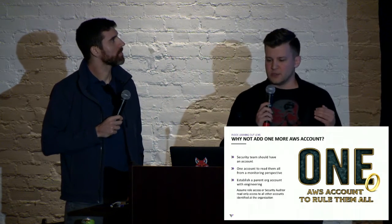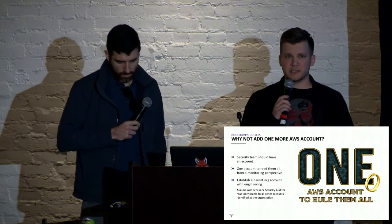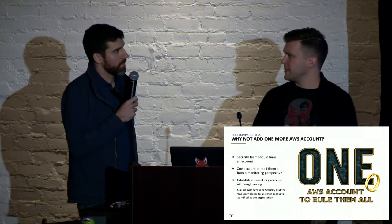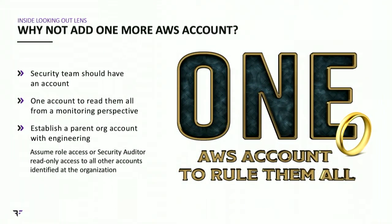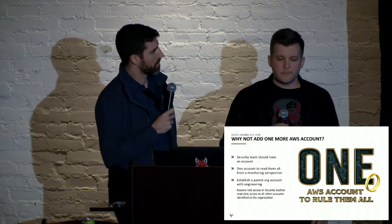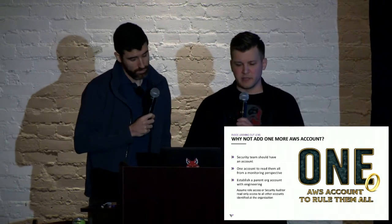The next step would really be to create one account for security — add one more account that you, as the security team, can operationalize to monitor all the other accounts. The way we've been tackling this problem is asking customers to create a read-only auditor role account, and then perform an assume-role action into their accounts so that we can pull out data that's important in terms of external attack surface and perform testing that way. Azure has service principal to do this; GCP supports this as well. Ultimately it's going to be your inside-looking-out lens for those cloud accounts.